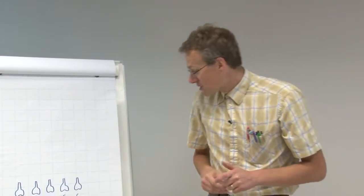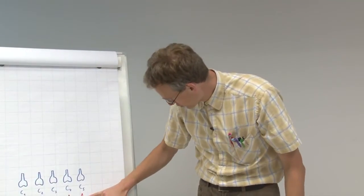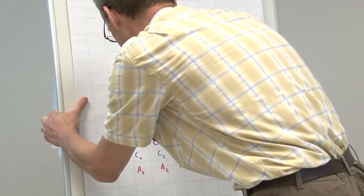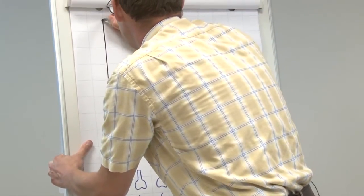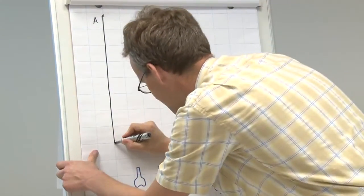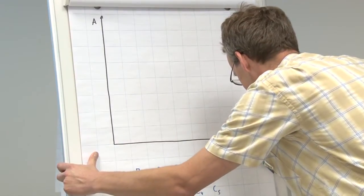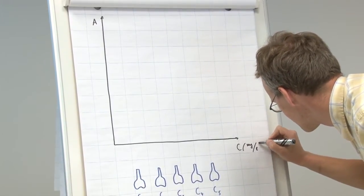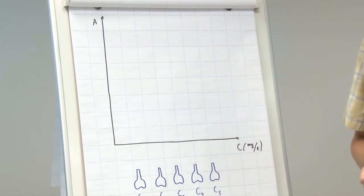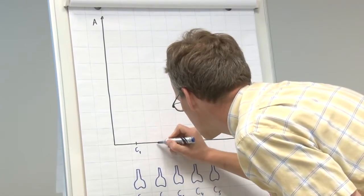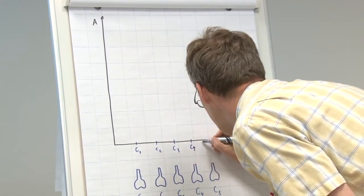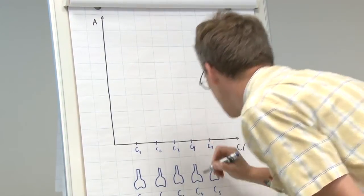And in fact, calibration graph is nothing else than the measured quantity, which in this case is absorbance, plotted against the concentration. So that there is the absorbance axis and concentration axis. And these concentrations C1, C2, C3, C4, and C5 can be seen here.